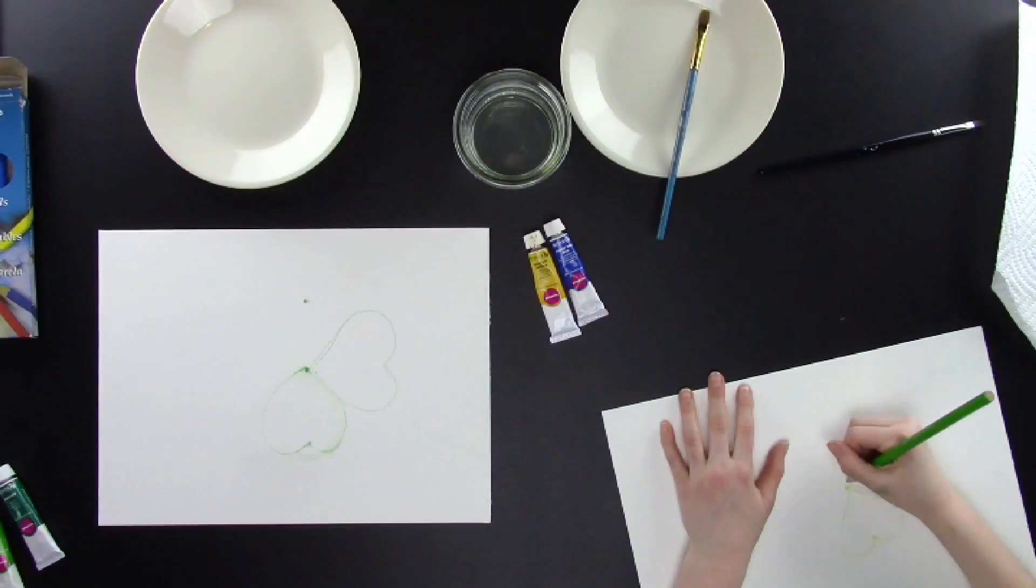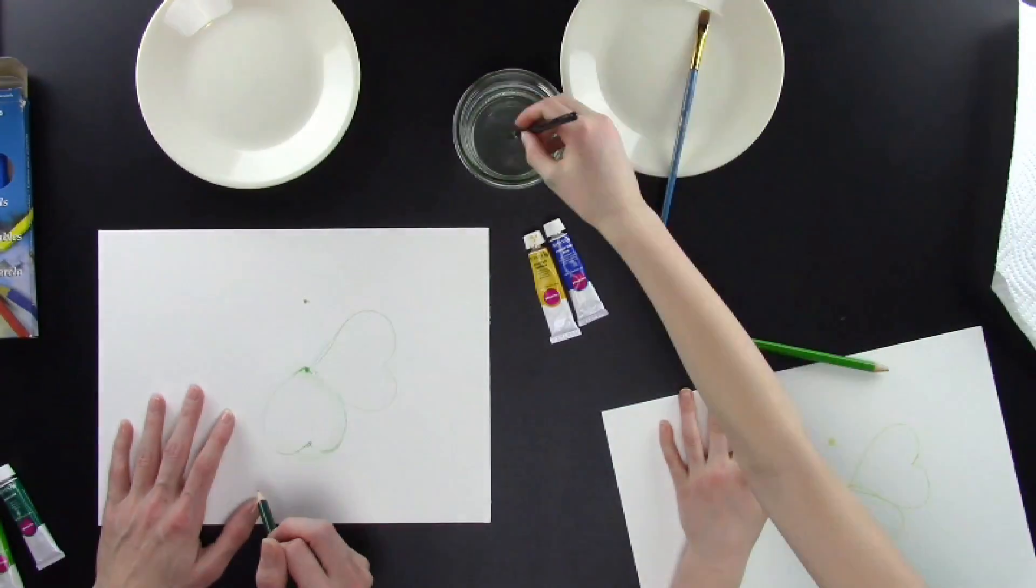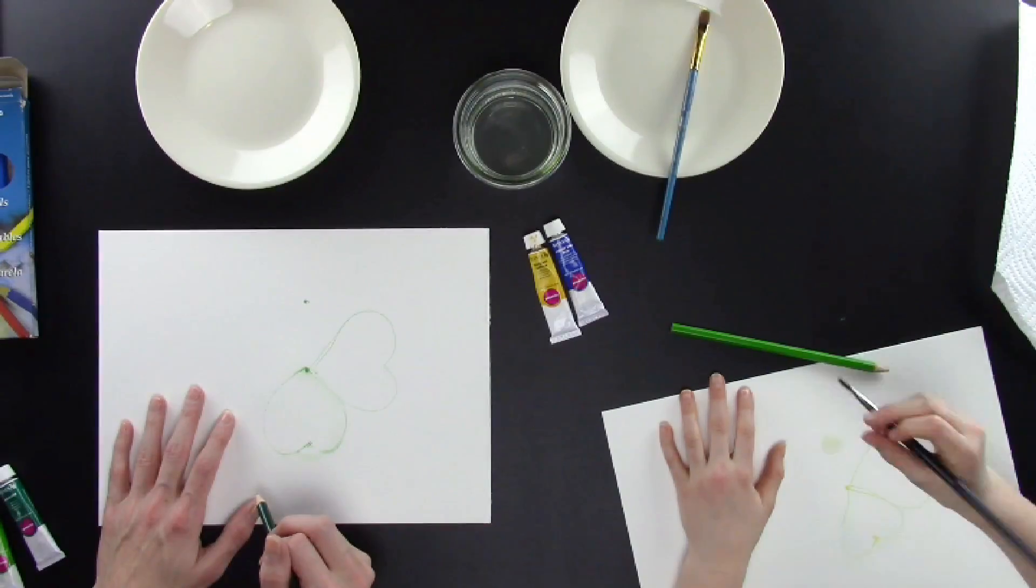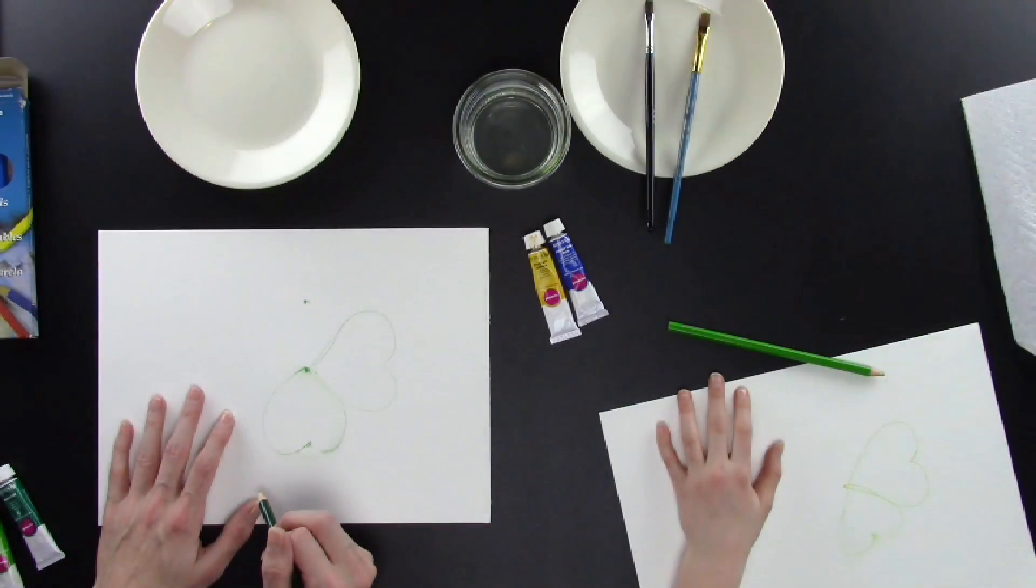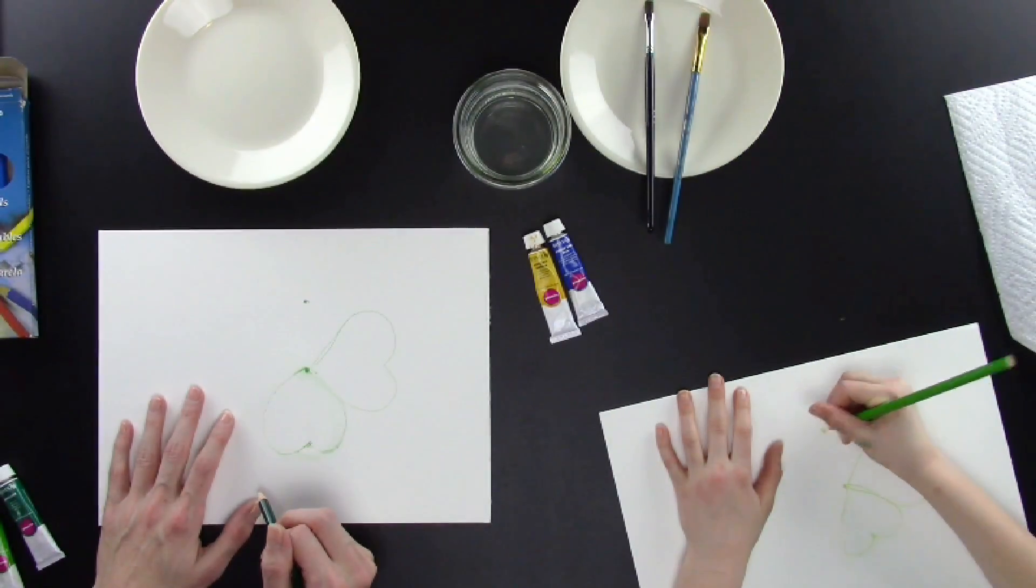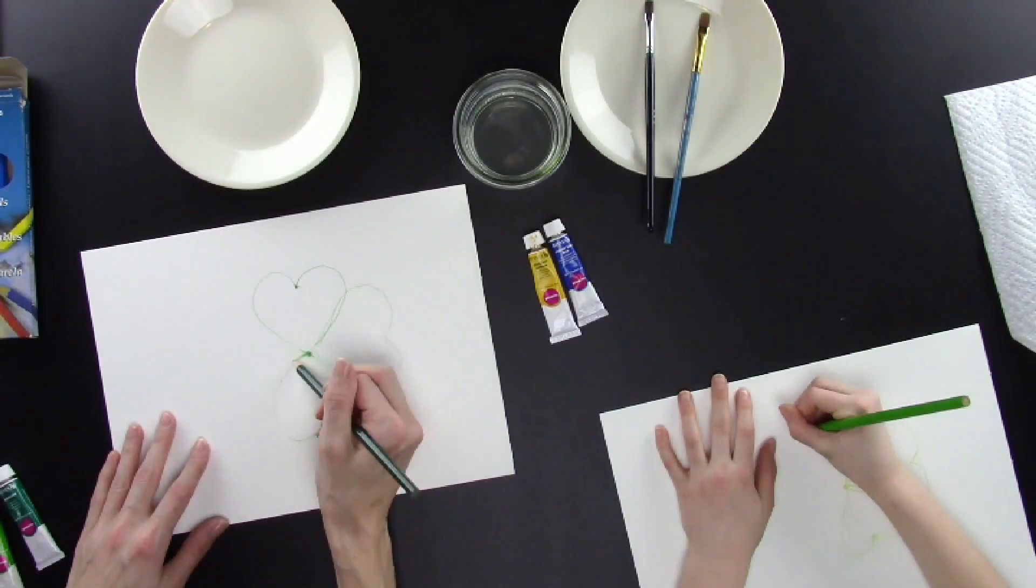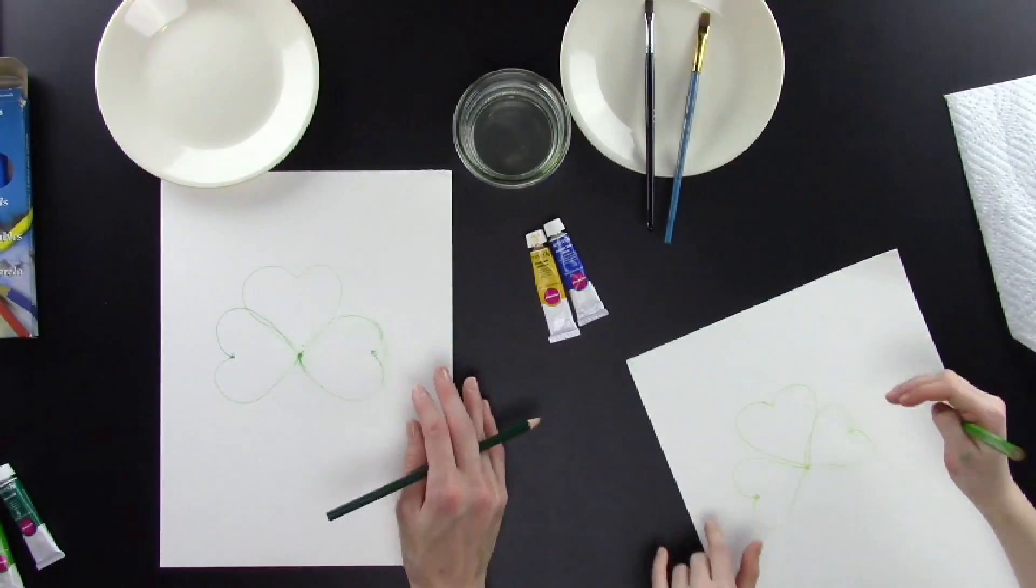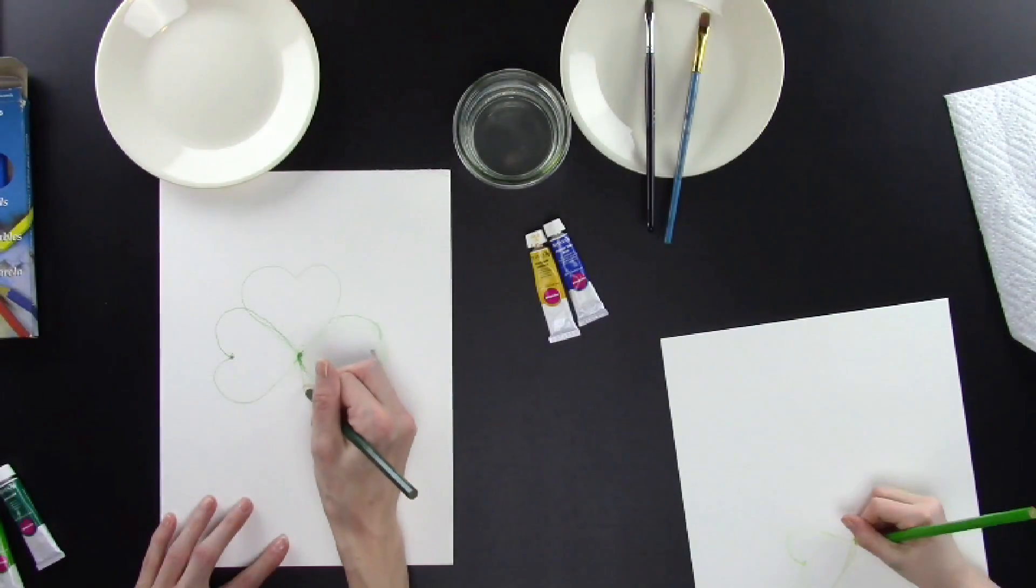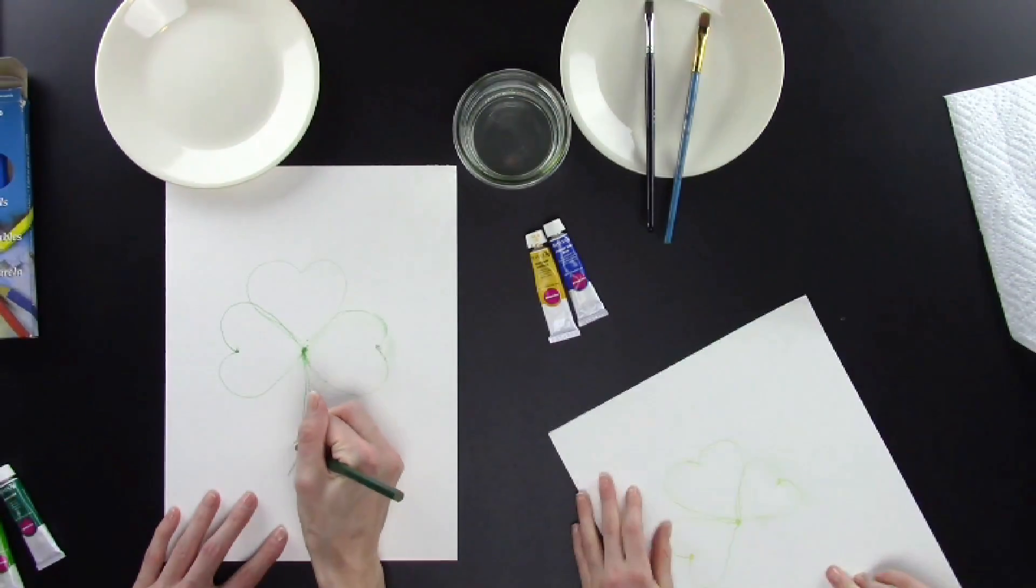Turn your paper again and draw another heart for the third leaf of your shamrock. I'm going to use those dots again to guide me. It's so nice that we can just erase those lines with water if we mess up.